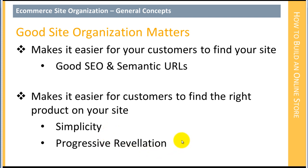The second principle is progressive revelation. Even in a complex site, it doesn't seem complex. We let somebody make one decision, and that decision leads them to another set of choices. Then they make the next decision, which may lead to yet another set of choices. We don't expose the entire chain of the site organization in one place — we progressively reveal it and open the site up as people enter it.